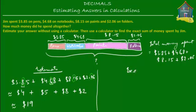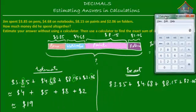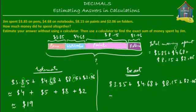Now let's find out exactly how much Jim spent. Adding 3.85 + 4.68 + 8.15 + 2.06 using a calculator gives us 18.74. So the exact amount is $18.74. What we had estimated was nearly equal to $19 — that's our estimation.